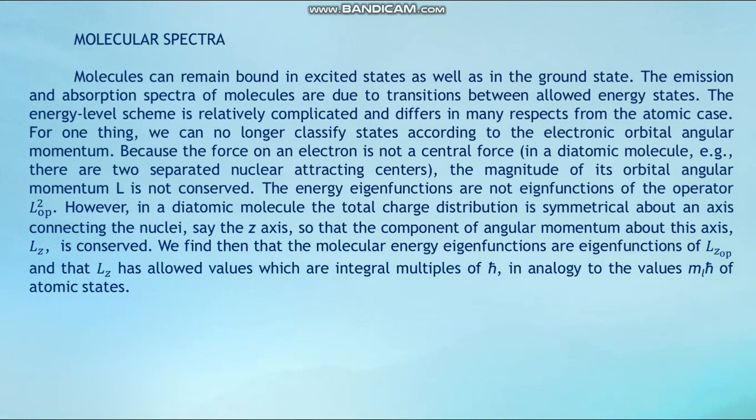Molecules can remain bound in excited states as well as in the ground state. The emission and absorption spectra of molecules are due to transitions between allowed energy states. The energy level scheme is relatively complicated and differs in many respects from the atomic case. For one thing, we can no longer classify states according to the electronic orbital angular momentum because the force on the electron is not a central force — in a diatomic molecule there are two separated nuclear attracting centers.